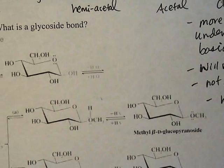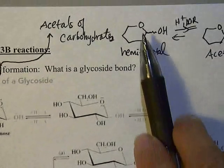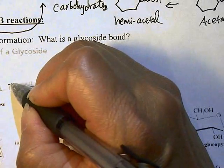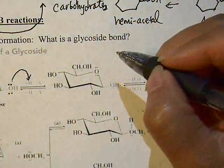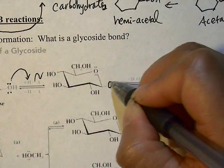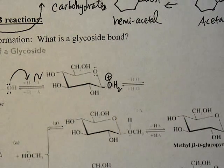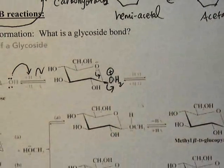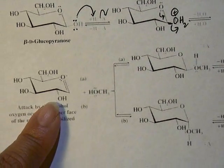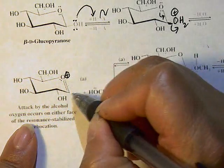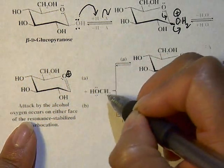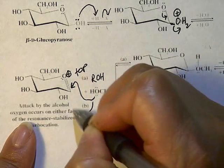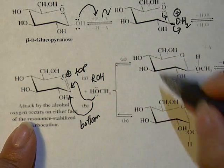Now let's go over the mechanism for going from hemiacetal to acetal — it's the same mechanism you've seen before, just applied to sugar. The hemiacetal's anomeric OH grabs the acid to form OH₂⁺, which is now a good leaving group and gets pushed out to form an oxocarbenium-type intermediate with a positive charge on the oxygen. This intermediate is now susceptible to nucleophilic attack at the anomeric carbon by the incoming alcohol (ROH), which can attack from the top or the bottom with equal probability, giving a mixture.